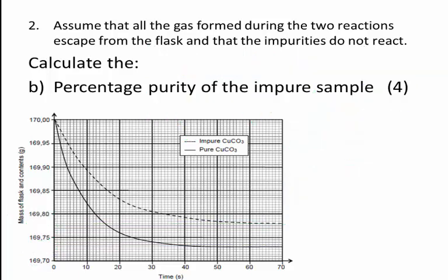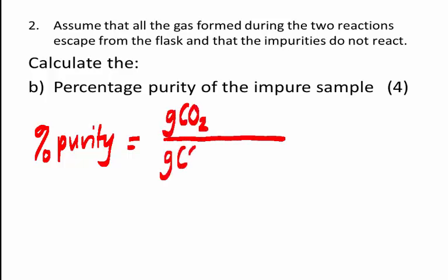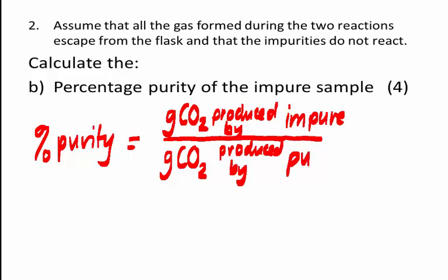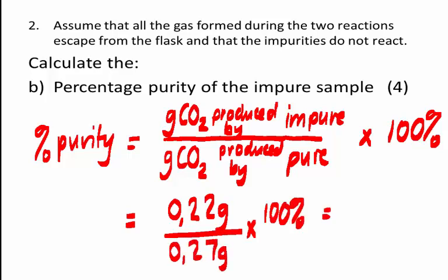So now we can answer the question. The percent purity of the impure sample is calculated as the ratio of the mass of CO₂ produced by the impure sample to the mass of CO₂ produced by the pure sample, converted to a percentage. The impure sample produced 0.22 grams and the pure sample produced 0.27 grams. 0.22 divided by 0.27 is 0.8148, multiplied by 100 and rounded to two decimal places: 81.48%.